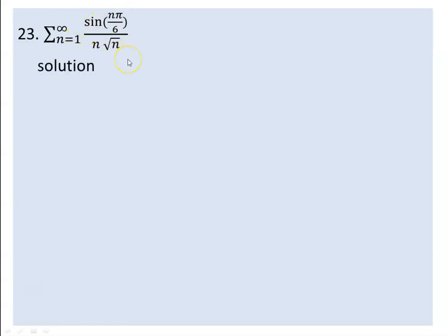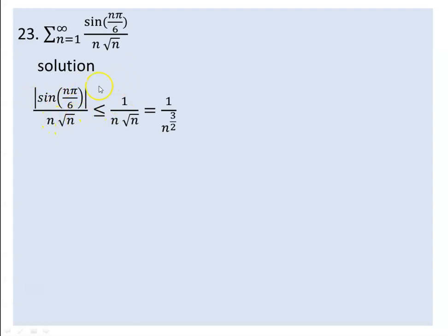So the idea is to look at the absolute value of sin(nπ/6) over the square root of n. As we all know, the absolute value of sine of any number — any degree value or radian value — is always less than or equal to 1.